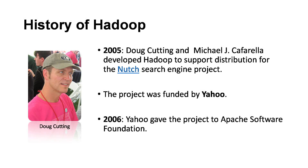Looking into the history of Hadoop, it was developed by Doug Cutting and Michael Cafarella as part of the Nutch search engine project. They developed this tool in 2005. Later, the project was funded by Yahoo, and in 2006 Yahoo gave this project to the Apache Foundation. Since then, Apache has been maintaining Hadoop, and apart from the core Hadoop, a lot of ecosystem tools have also been developed by the Apache team.